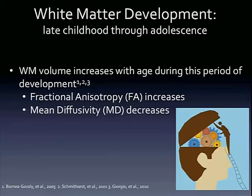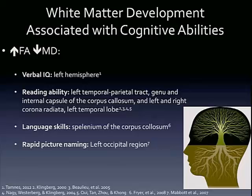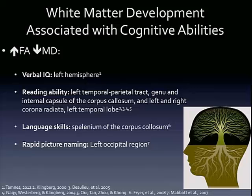As far as white matter development during this age period, you would expect increases in total white matter volume, increases in FA — that increase in structural organization of white matter tracts — and decreases in MD, mostly seen through increased myelination. We hypothesize that those white matter networks involved in language processing would be associated with skill acquisition. Past research has looked at verbal IQ, reading ability, and language skills, and has found generally that there's an increase in FA associated with improvement in performance, and a decrease in MD, as you would expect.